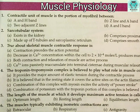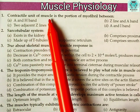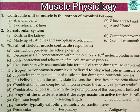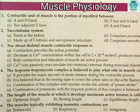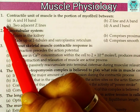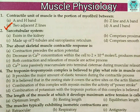Our first question: the contractile unit of muscle is the portion of myofibril between — is it (a) A and H band, (b) Z line and A band, (c) two adjacent Z lines, or (d) A and I band? The right answer is (c), that is two adjacent Z lines.